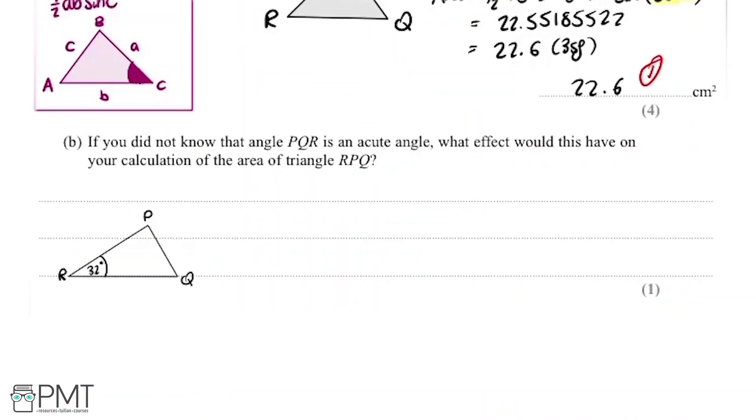Now part B says, if you did not know that the angle PQR is acute, what effect would this have on your calculation of the area of the triangle RPQ? I've got a little diagram of the triangle here. In this case, Q is acute, you can see here. As we said in the previous part, when the angle is acute, it means it's less than 90 degrees. So the other option would be that the angle could be obtuse, or greater than 90 degrees.